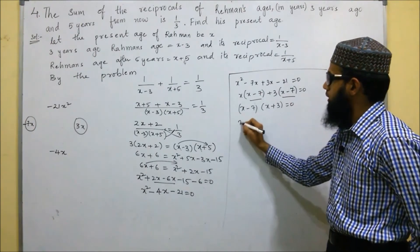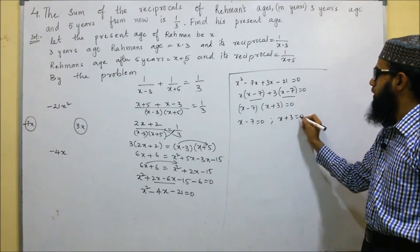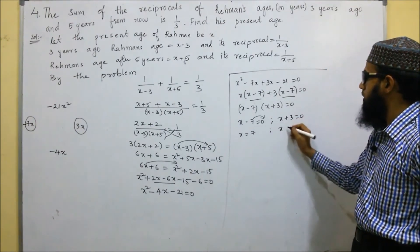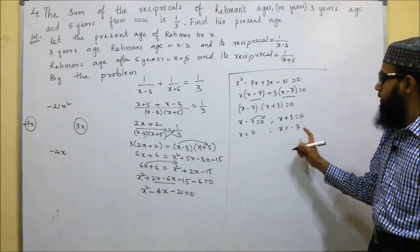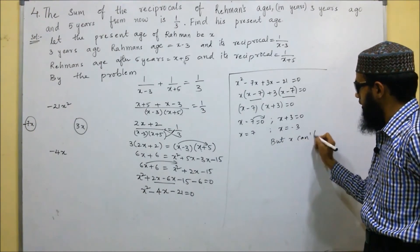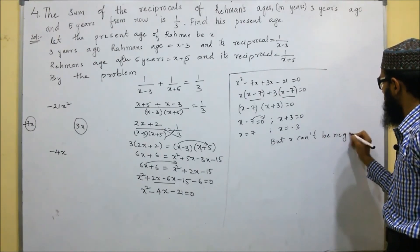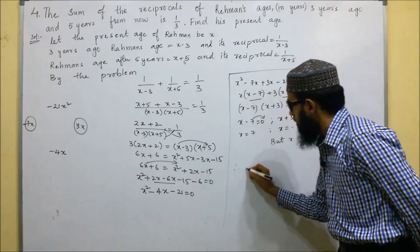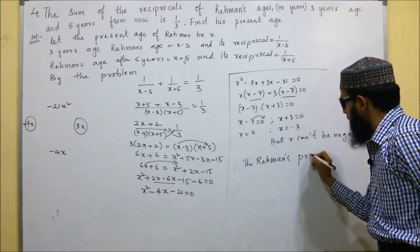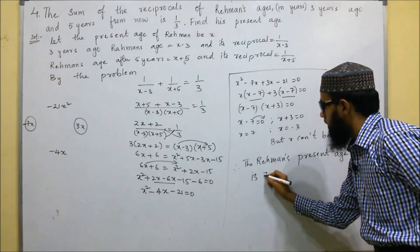Setting each factor to zero: X minus 7 equals zero gives X equals 7, and X plus 3 equals zero gives X equals minus 3. We neglect the negative value because ages cannot be negative. Therefore, Rahman's present age is 7 years.